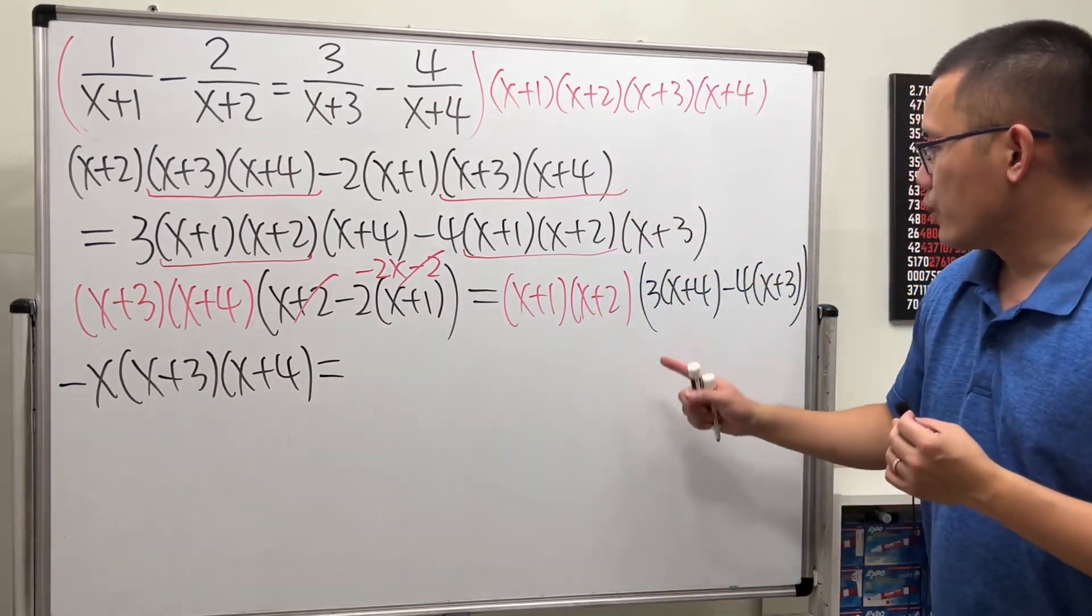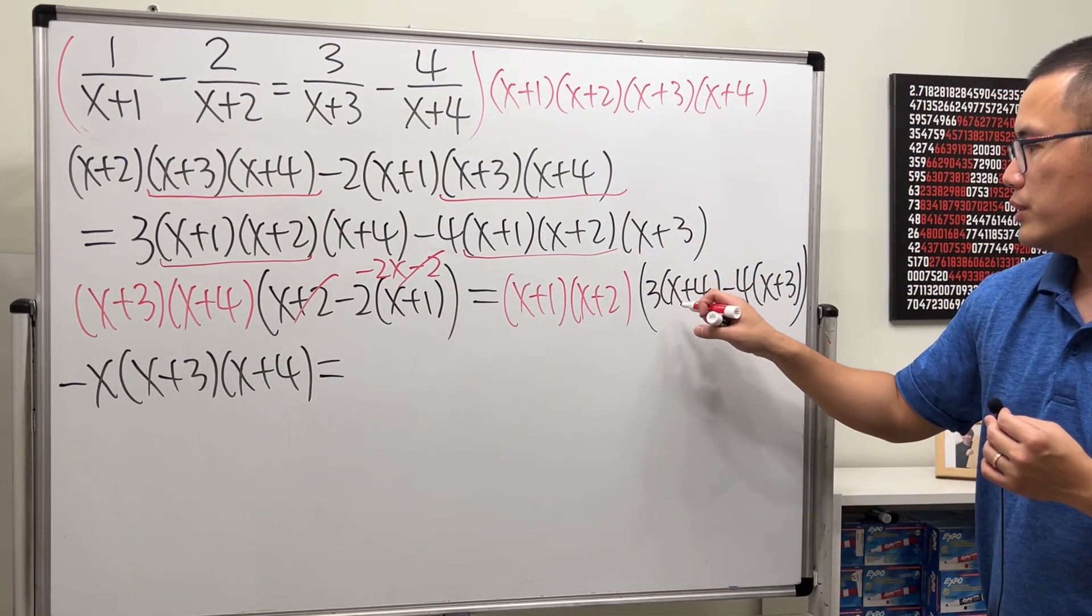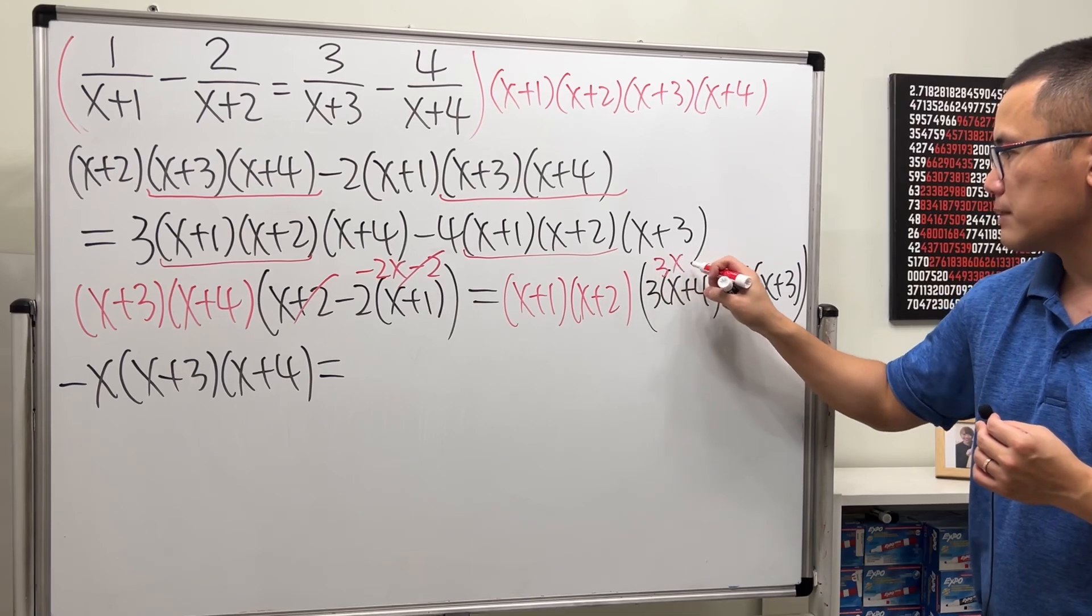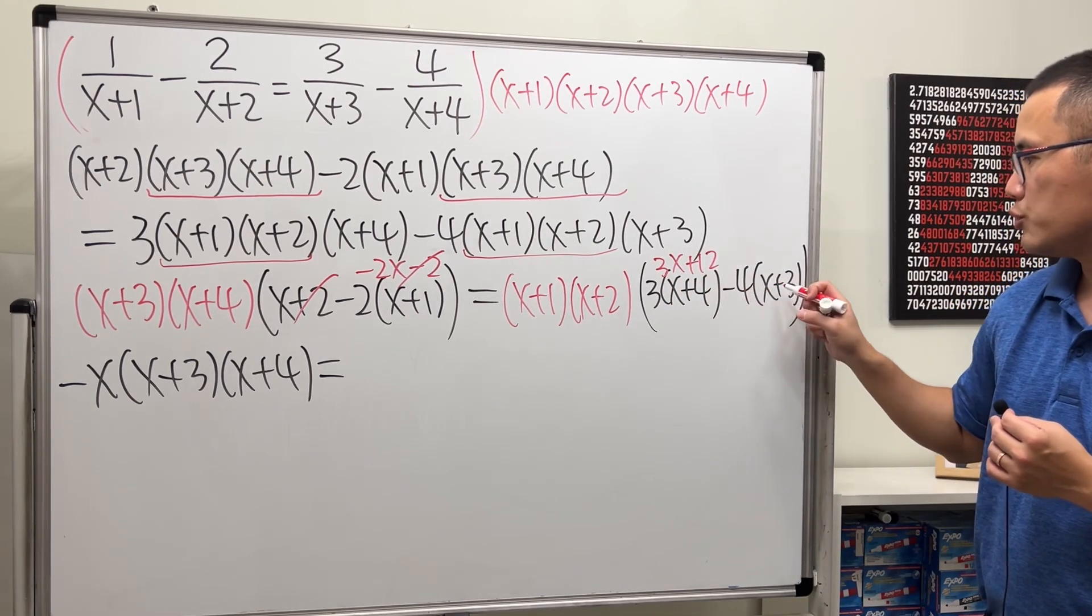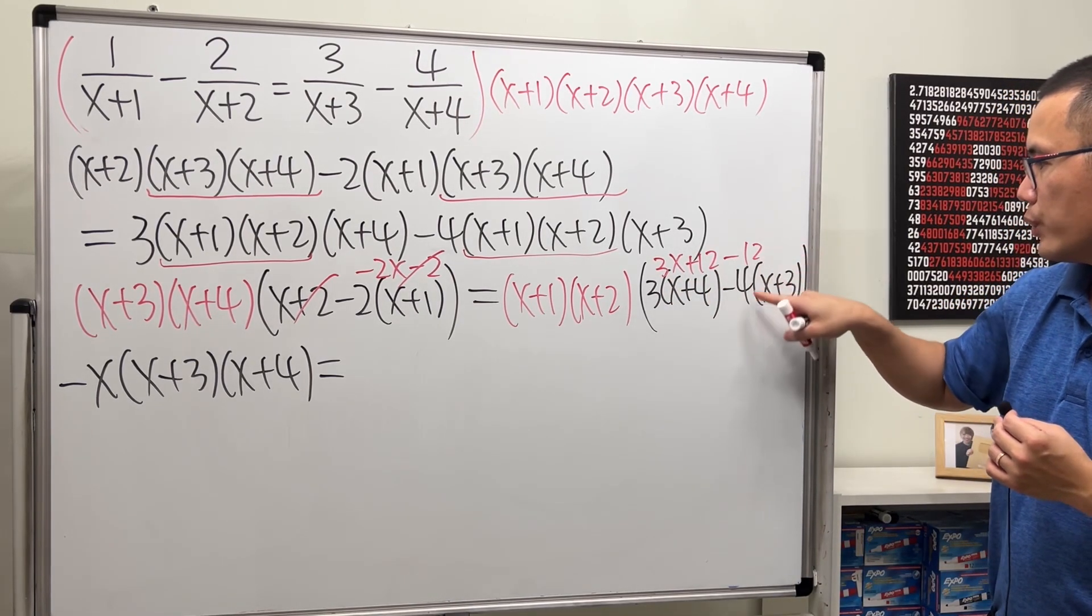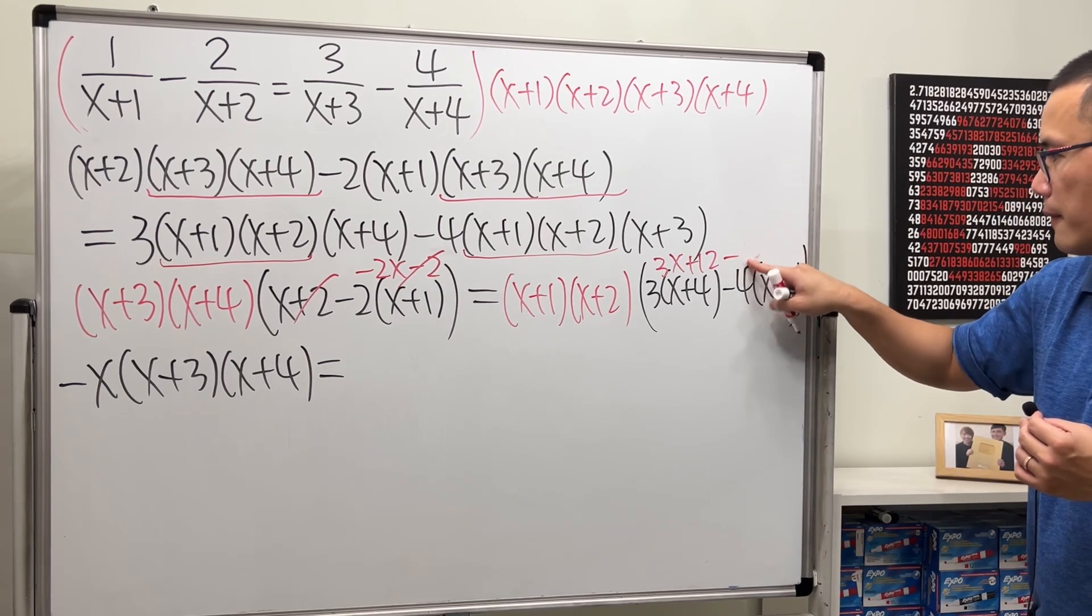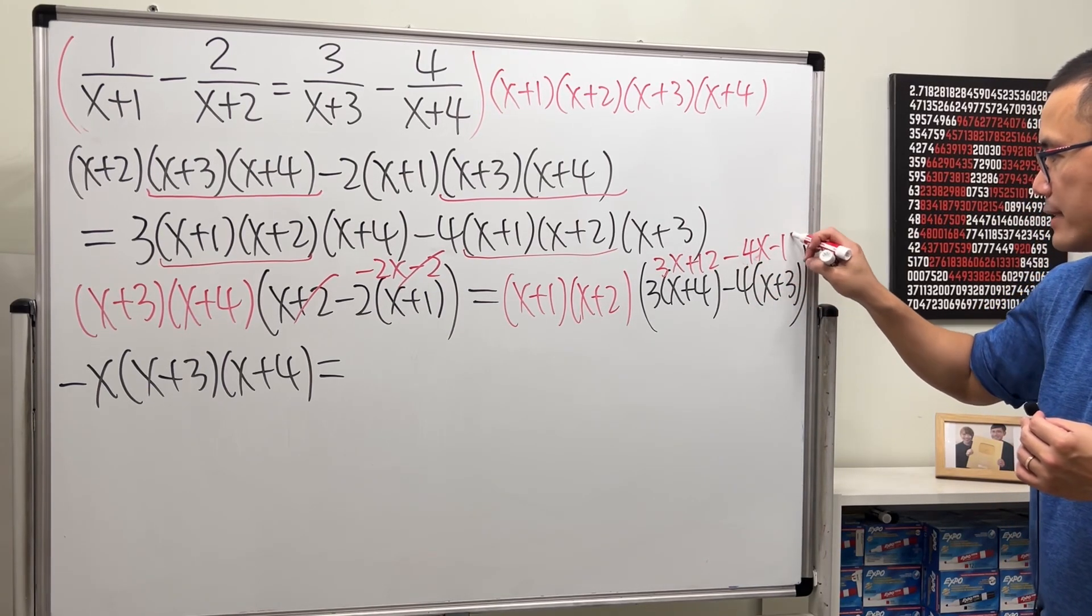And that's equal to. Right here, let's do the same thing. 3, distribute that inside, so 3x plus 12. And then, distribute the negative 4. We get negative 4x minus 12.